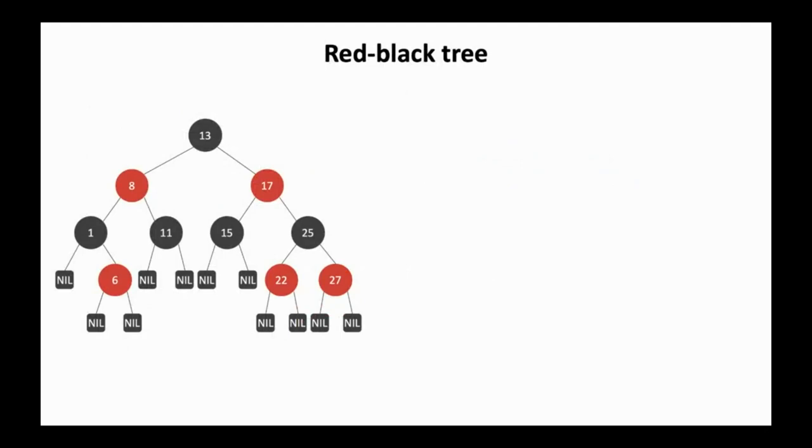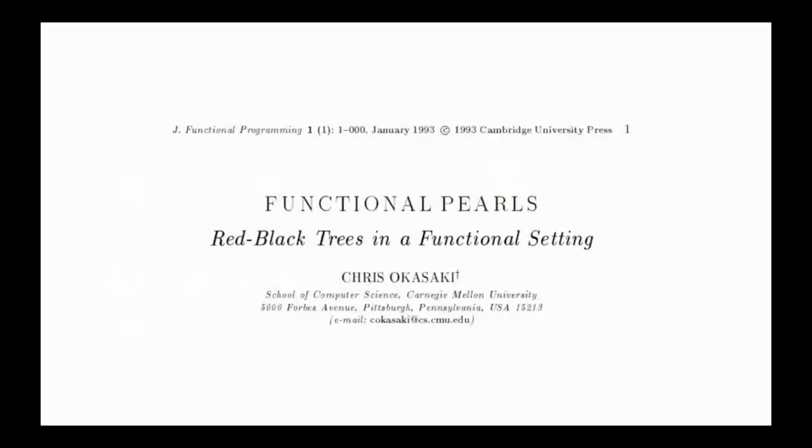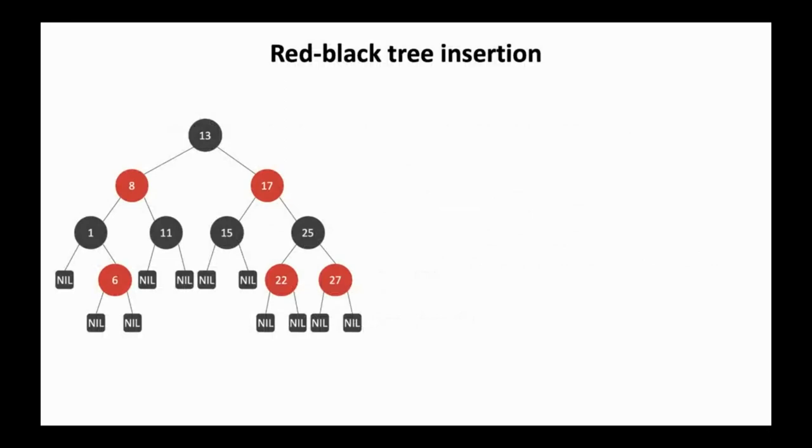As an example, we consider insertion into a red-black tree. The definition of red-black tree is well known, right? So, each node is either red or black. The root and all leaves are black. If a node is red, then its children are black. The red-black tree has the invariant that every path from the root to any of the leaves goes through the same number of black nodes. With such property, people prove that search, deletion, and insertion in red-black tree can all be done in O(log n) time. In 1993, Okazaki shows how to encode the red-black tree in a functional setting.